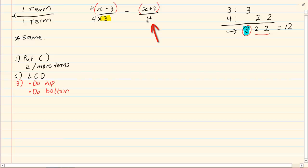Now let's go to the 4. If I take out the 4 from my LCD, I am left with 3. So I am going to multiply my 4 with a 3. But again, what I do at the bottom, I need to do on the top.